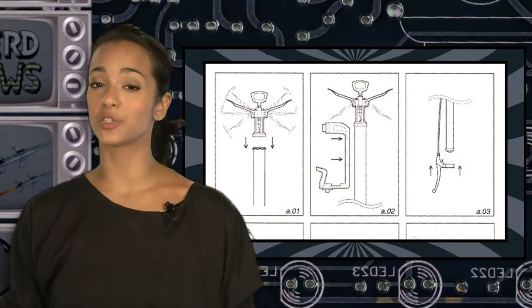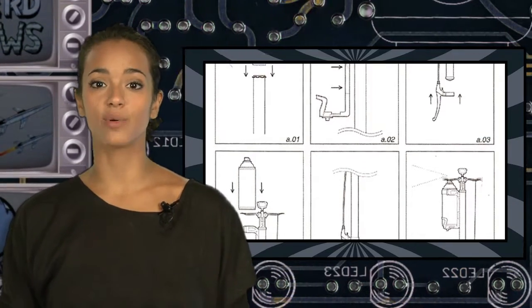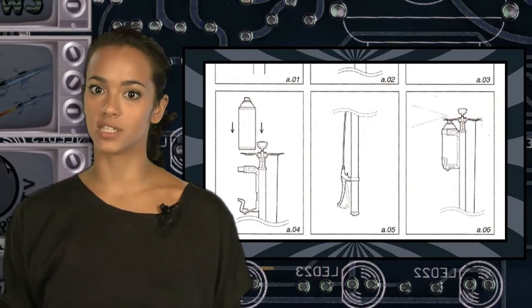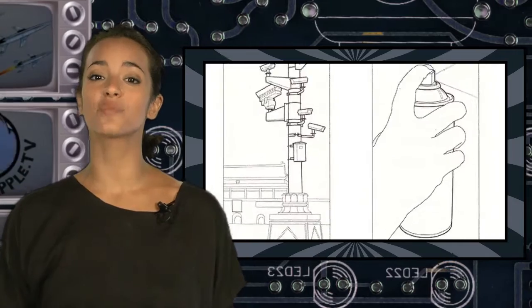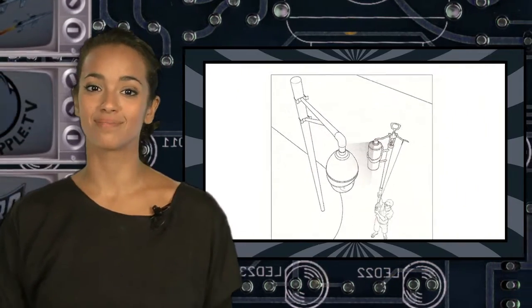Squeeze the handle of the bicycle brake bar and it pulls the string, which pulls the corkscrew arm, which depresses the button on the spray can, which then spray paints all over the offending cameras. Simple, huh?